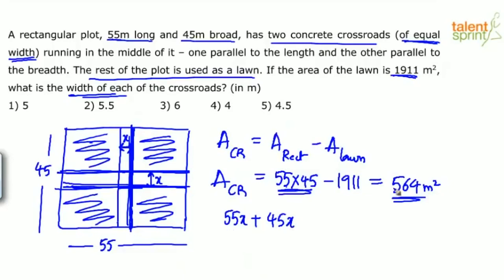So 55x plus 45x is equal to 564, if this is what you are feeling, you are wrong. Because when you add 55x plus 45x, you have considered this small square in the middle twice. This fully shaded box that we have has been counted twice, in the horizontal crossroads as well as in the vertical crossroads. Now what is the area of this shaded box? x square. This is like a square, both the sides are x and x, so x square. So from this 55x plus 45x, you have to subtract x square.